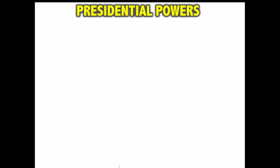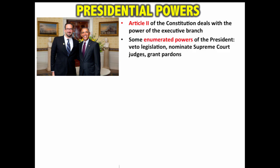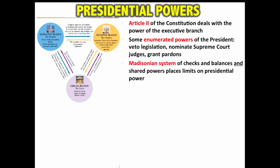Article Two of the Constitution deals with the power of the executive branch, and unlike the details spelled out in Article One dealing with the legislative branch, Article Two is rather short on specifics. There are some enumerated powers of the president, including vetoing legislation, nominating Supreme Court judges, and granting pardons.